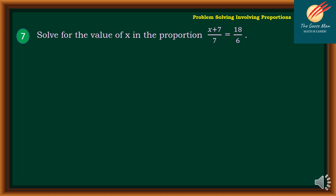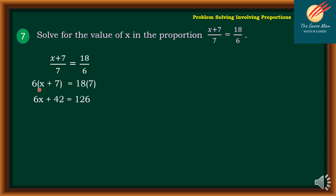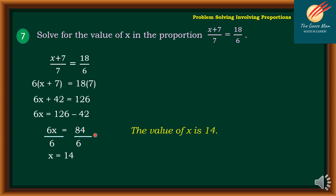Let's move on to problem number 7: solve for the value of x in the proportion (x plus 7) over 7 equals 18 over 6. Using the cross products, (x plus 7) times 6 equals 7 times 18. So 6 times (x plus 7) equals 18 times 7. Using the distributive property: 6x plus 42 equals 126. Subtracting 42 from both sides: 6x equals 84. Dividing both sides by 6: x equals 14. Therefore, the value of x is equal to 14.